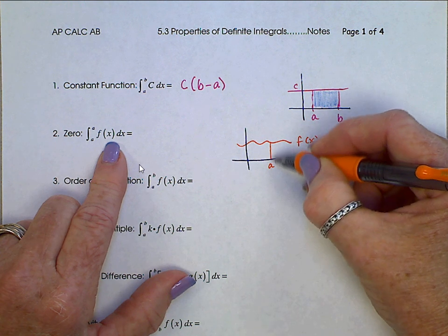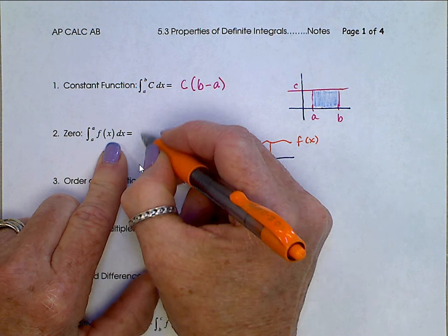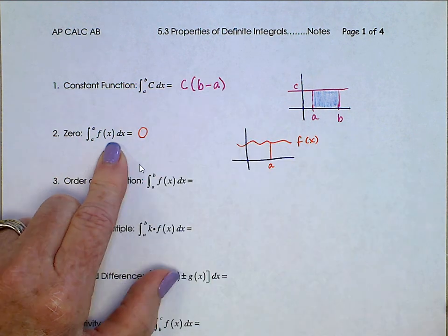and let's find the area underneath this function from some spot A to some spot A. Clearly, there's no area underneath there, same starting point, so no area here. The value of that integral is 0.